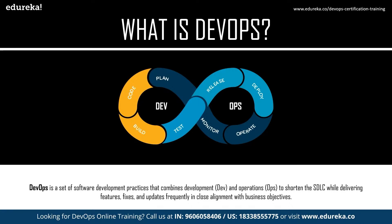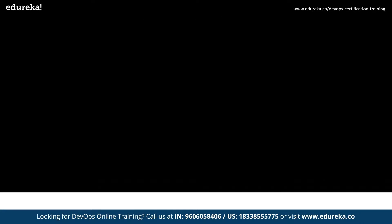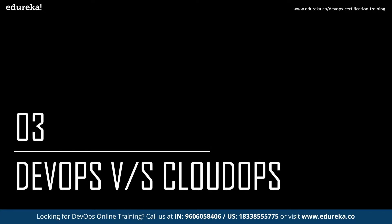Moving on — what is DevOps? DevOps is a combination of two words: development and operations. It is a practice that allows a single team to manage the entire application development lifecycle — that is, development, testing, deployment, and monitoring. DevOps is a software development approach with which you can develop quality software quickly and with more reliability. It consists of stages such as continuous development, continuous integration, continuous testing, continuous deployment, and continuous monitoring.